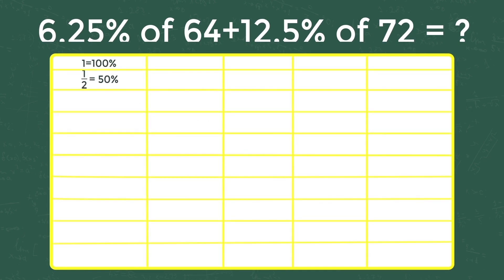From the table: 1 by 2 is equal to 50 percent, 1 by 3 is equal to 33.33 percent, 2 by 3 is equal to 66.66 percent, 1 by 4 is equal to 25 percent, 3 by 4 is equal to 75 percent, 5 by 4 is equal to 125 percent.